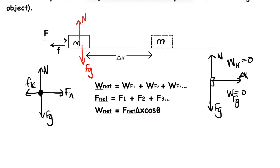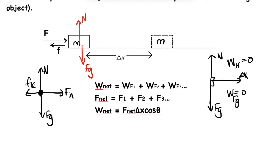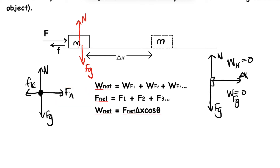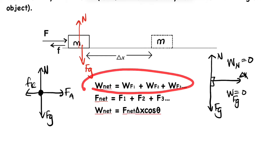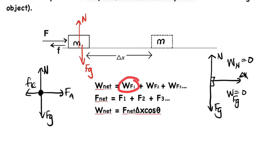When we talk about the net work done, it will be the sum of only the forces that act parallel to the displacement. The displacement is parallel to the applied force and the frictional force, so we use this formula: we add the work done by each force that is actually doing work.